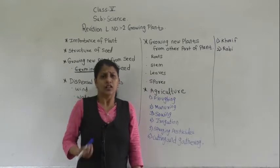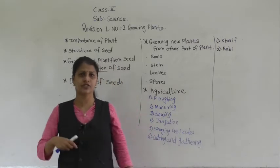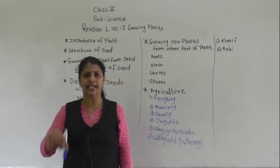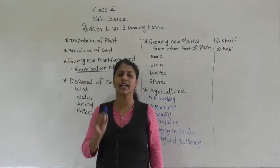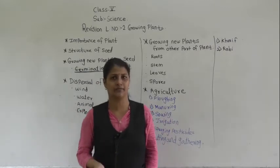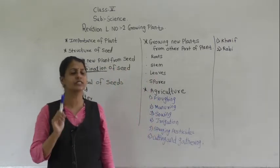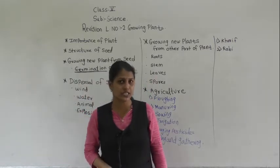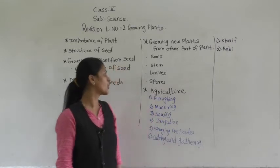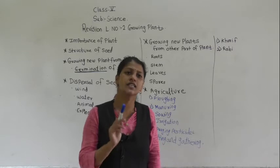By the stem — there are some plants, for example potato, that grow underground but are not actually roots; they are stems. We call them underground stems. Potato and ginger are examples of plants that grow underground as underground stems.